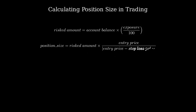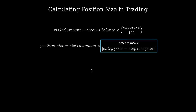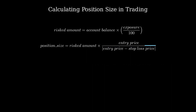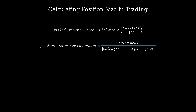Then the final step: the position size you should take on is equal to this risk amount we've just computed times the inverse of what is often referred to as the stop loss ratio or stop loss percentage, where the entry price is the price at which you enter the trade, while the stop loss price is the exit price you've chosen in case the trade goes against you. Note the use of an absolute value there — this is to ensure this number is always positive whether you're doing longs or shorts.